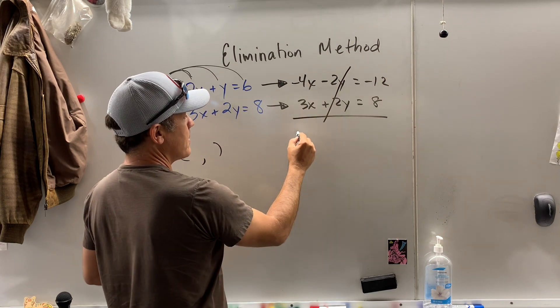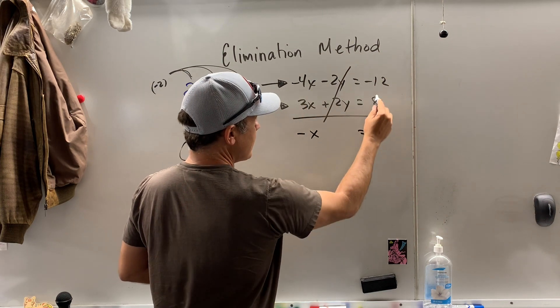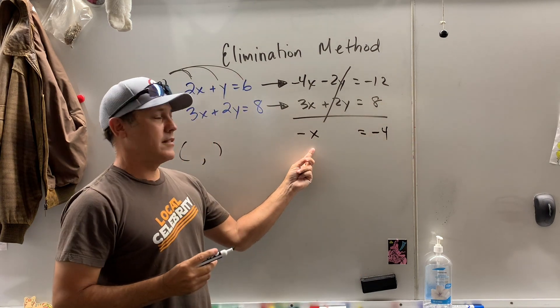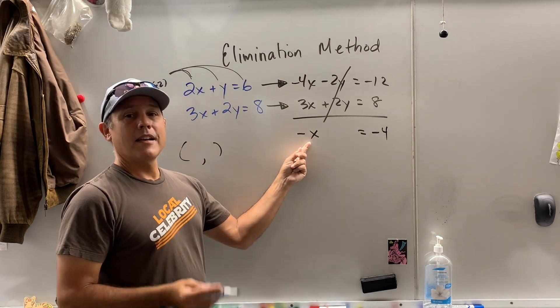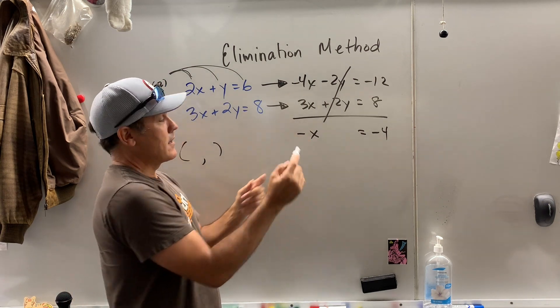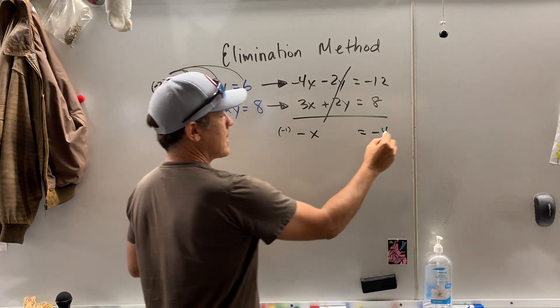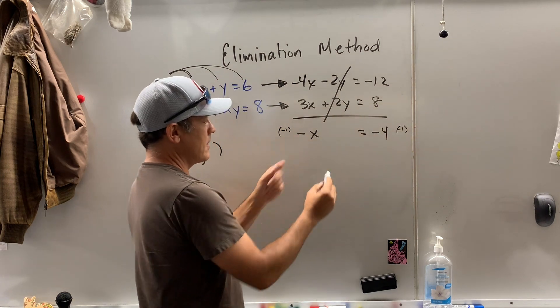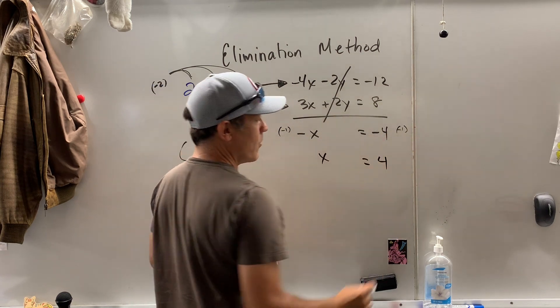Negative 4x plus 3x is negative x, and negative 12 plus 8, we get negative 4. Now, I do not want to know what negative x is. I want to know what x is. So you could divide by negative one. I just like multiplying both sides by negative one. That will get rid of that negative sign, and we get 4.